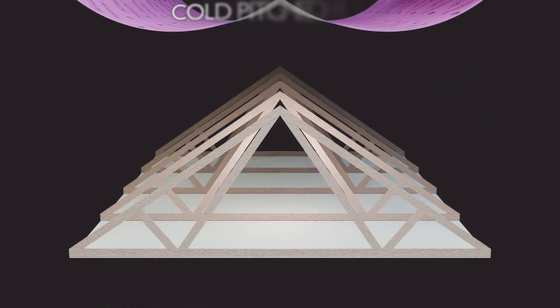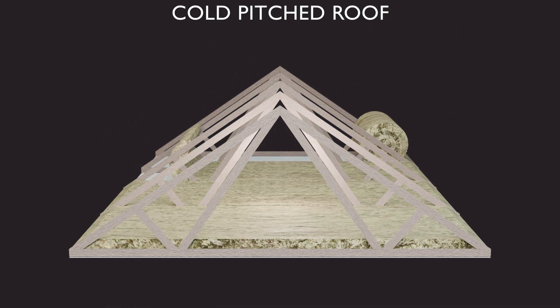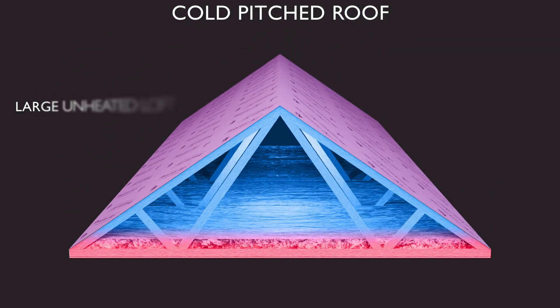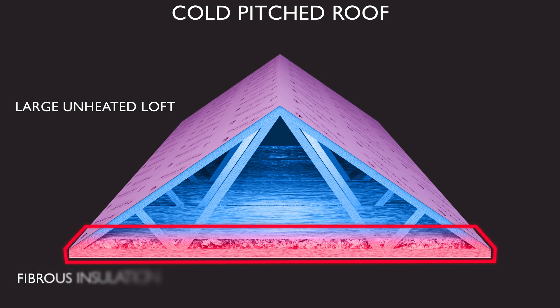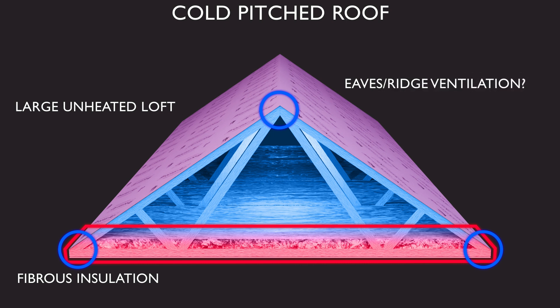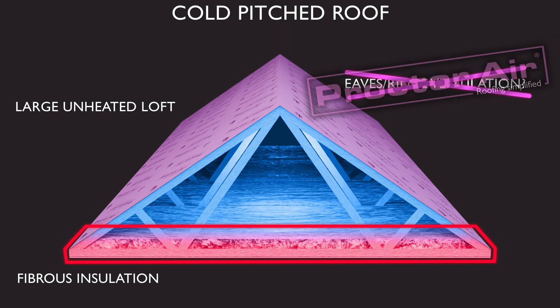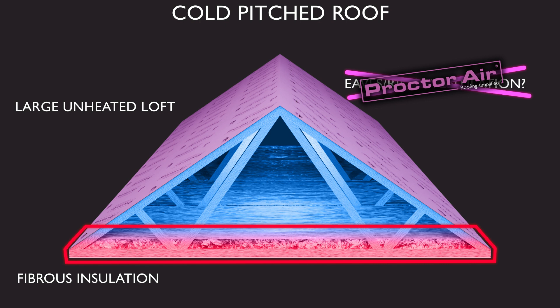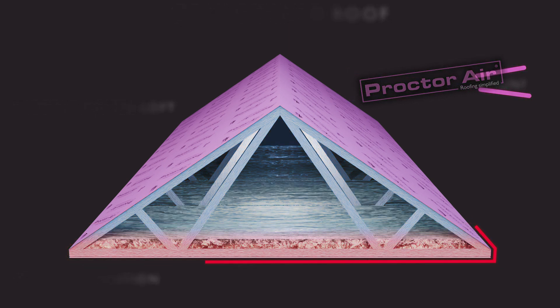Firstly, we have cold pitched roofs where the insulation is placed at ceiling level with a large cold loft space above. In this type of roof, the insulation used is usually mineral fibre, as space is rarely an issue. Traditionally, these loft spaces are ventilated with openings at the eaves and/or ridge to allow airflow, but modern LR membranes may allow this ventilation to be reduced or eliminated, as is the case with ProctorAire. Air permeable membranes like ProctorAire are the least restricted in terms of conditions attached to non-ventilated use.